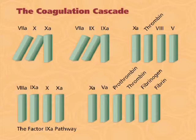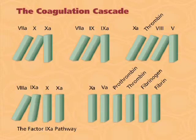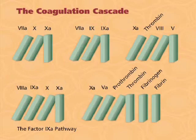By this stage, enough thrombin has been generated by the factor Xa to activate factors VIII and V, which both act as potent catalysts. Factor VIIIa increases the capacity of factor IXa to activate factor Xa many thousand times. The increased factor Xa produced in this way, along with its cofactor activated Va, forms a complex that promotes the efficient conversion of prothrombin to thrombin.